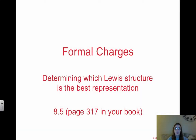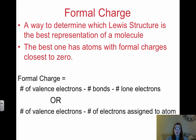Hi everyone and welcome to the video on formal charges and exceptions to the octet rule. We're going to start with formal charges, focusing on how to determine which Lewis structure is the best representation. Formal charge is a way to determine which Lewis structure best represents a molecule. If we have different resonance structures or different possible Lewis structures, formal charge helps us determine which is the best. The best Lewis structure is the one where atoms have formal charges closest to zero.